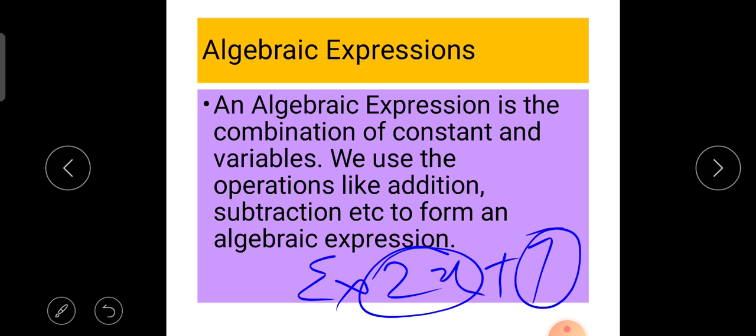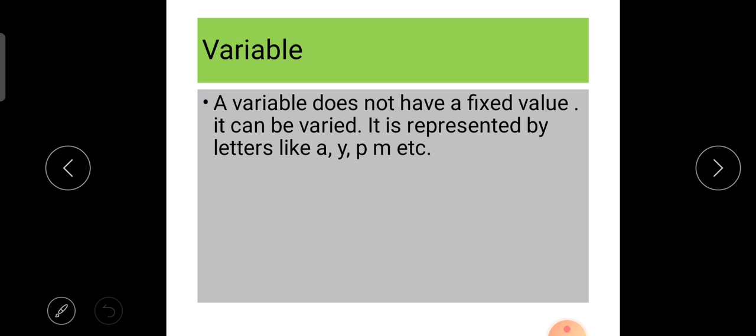A variable does not have a fixed value. It can be varied. It is represented by letters like a, y, p, m, etc. For example, I have the expression 2x plus 7, where x is a variable which can have many values: 1, 2, 3, and so on.